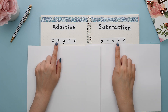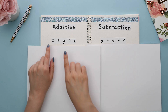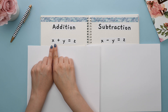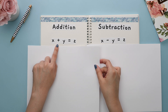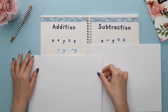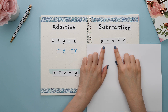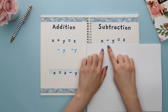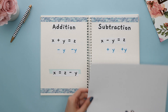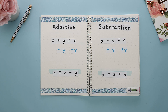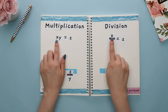So say we wanted to solve for x for both of these questions. We look at what isn't allowing x to be by itself, which is y. Since y is being added, we must do the opposite operation — subtraction — and subtract y from both sides to get x. Same concept for the next question: y is now being subtracted, so we do the opposite operation and add both sides by y. This is what x equals.